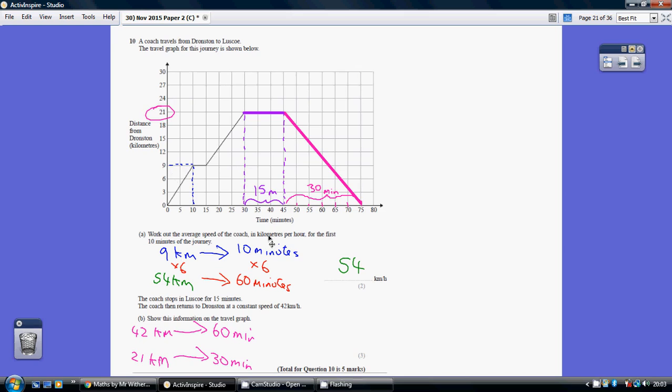Now we want to work out the speed in kilometers per hour, so we need to know how far we can go in 60 minutes. So how do we go from 10 minutes to 60 minutes?